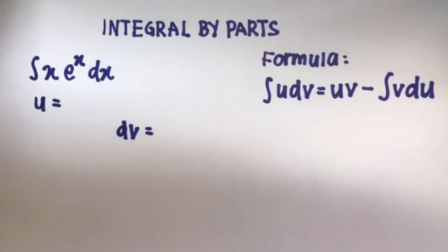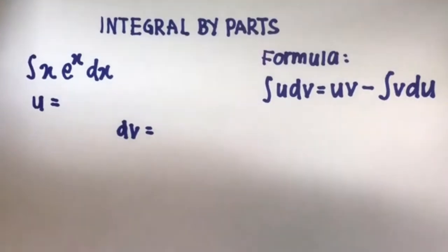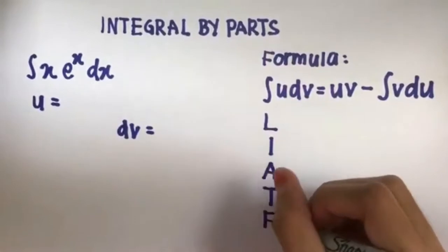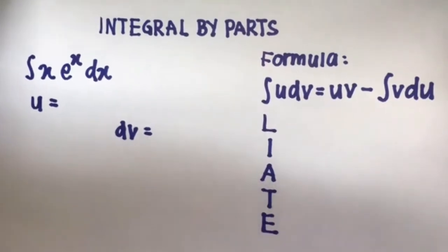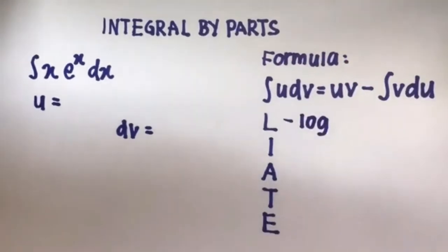Choosing U and DV can be the most confusing part — the hardest part, I think. So I'm going to show you a trick: the LIATE acronym trick. It's an acronym to help you pick U. U will be the first thing you find in this list of letters. L stands for logarithm — that could be natural log ln(x) or normal log.